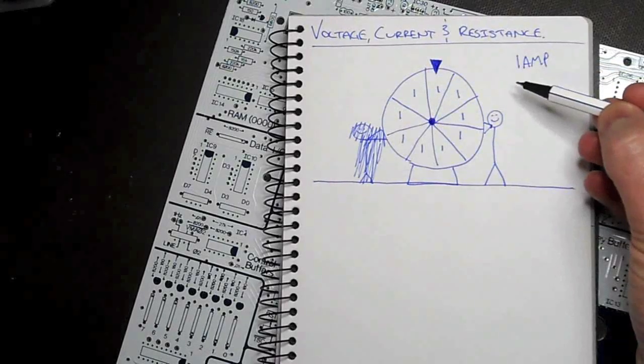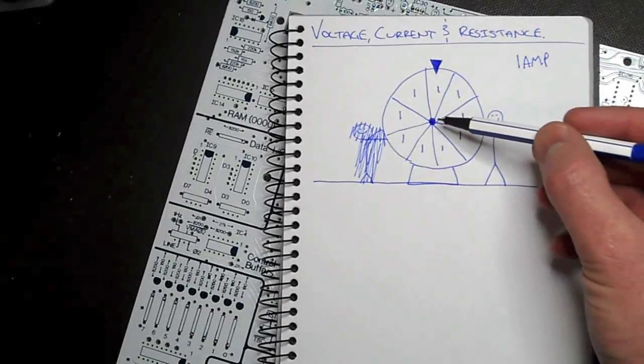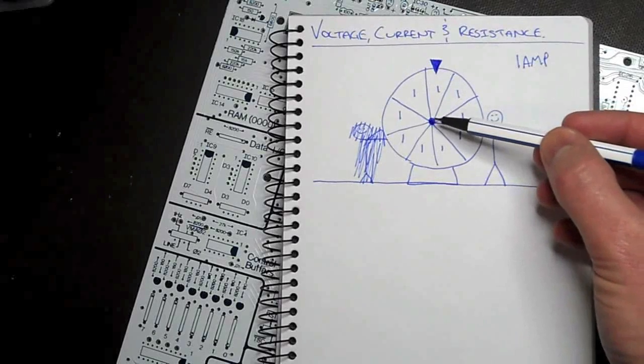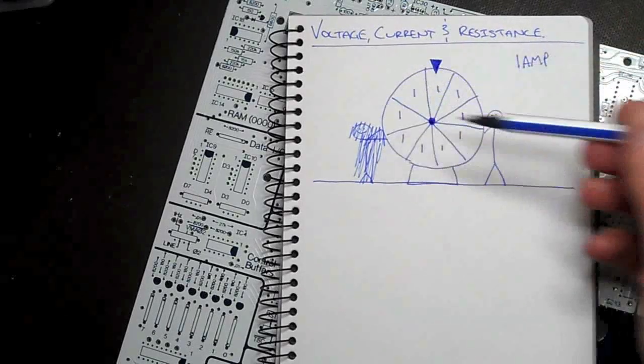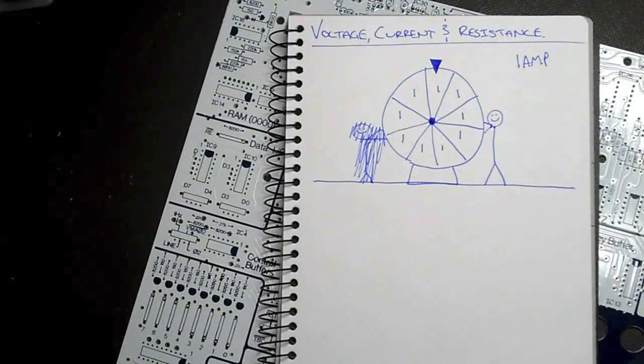So we will end up with less current. Same amount of force, we've now added resistance with some really bad bearings, we're not going to get this spinning as fast. So we might only get half an amp, or not even half an amp.